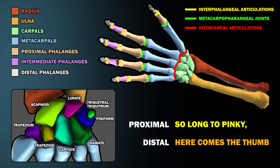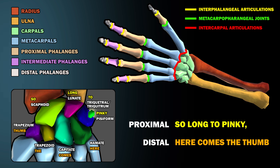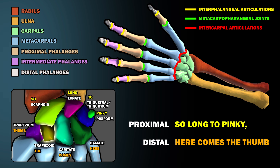Here's a helpful mnemonic for the carpals: "So long to pinky, here comes the thumb." Scaphoid, lunate, triquetrum, pisiform, hamate, capitate, trapezoid, trapezium.